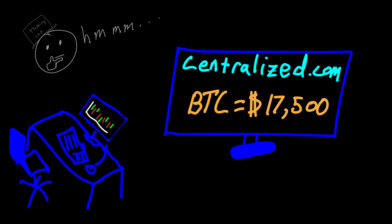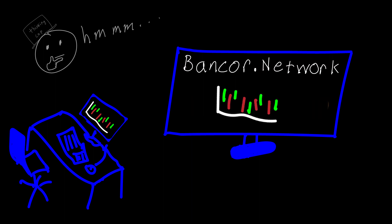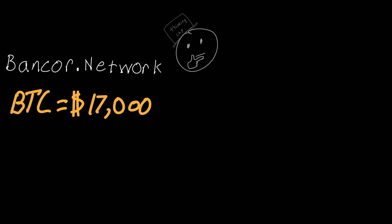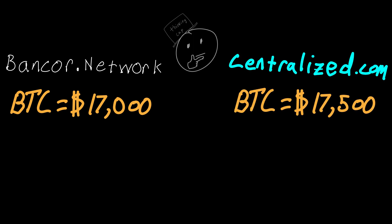And, as usual, the DEX charges about half the fee that the centralized exchange does. And then you notice that on the DEX, the price of a Bitcoin is $17,000. You realize that if you buy one Bitcoin for $17,000 here, you can sell that same Bitcoin for $17,500 there.